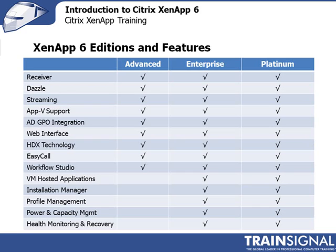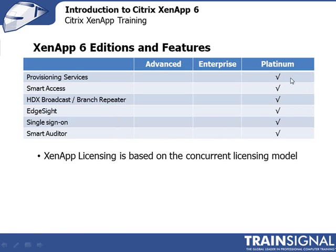There are three versions of ZenApp 6: Advanced, Enterprise, and Platinum. The Platinum Edition gives you access to everything. The Enterprise Edition gives you access to a comprehensive feature set shown on screen. I won't go through all the features, but I wanted to list them so you have an idea of what you get with each edition. Platinum adds additional features beyond what's shown on this screen.